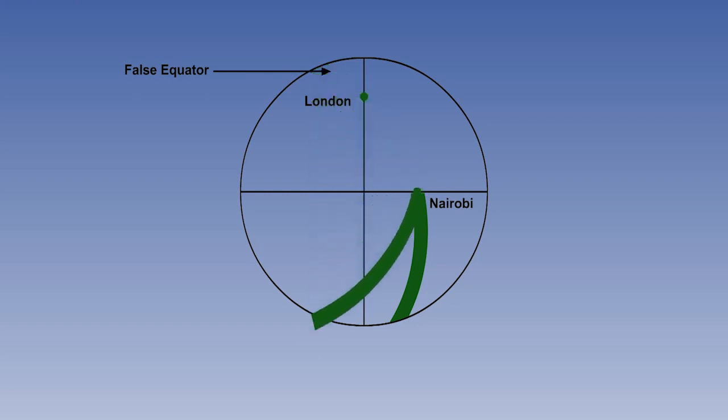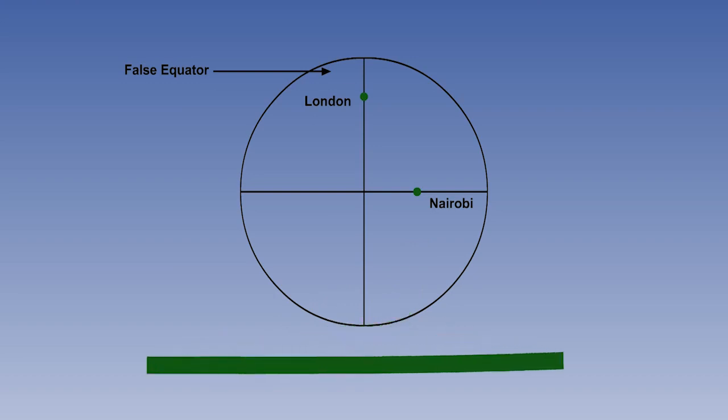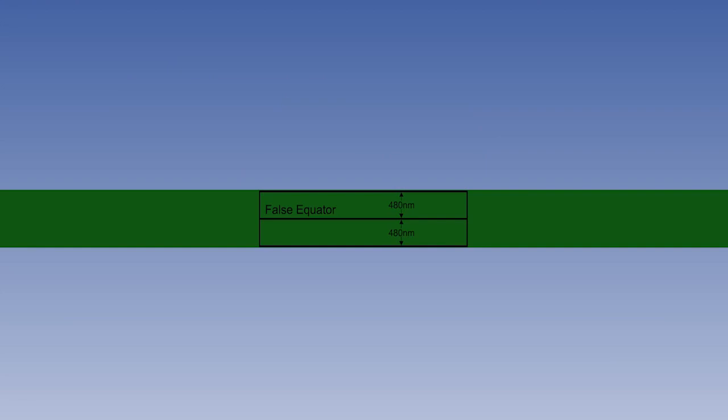If we take the false equator strip and lay it flat, and then cut it up into usefully sized segments for a convenient chart, we get a sheet with the false equator along the centre line. With less than 1% scale error anywhere on the chart, provided the scale chosen gives sides which are not more than 480 nautical miles away from the centre, on which straight lines may be taken to be great circles.